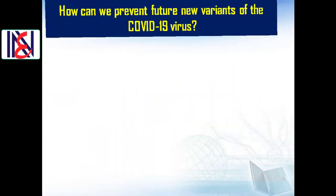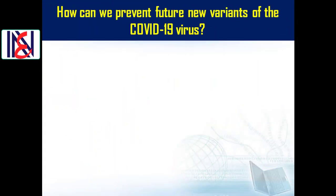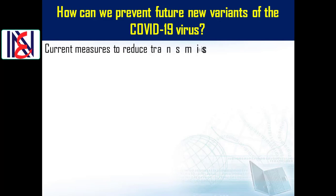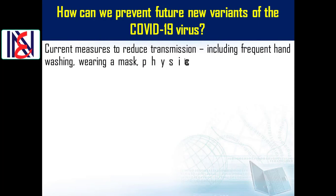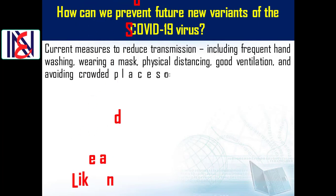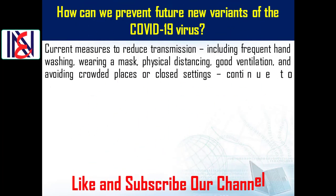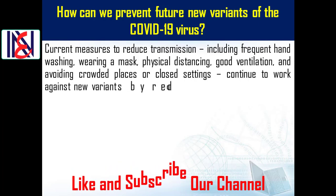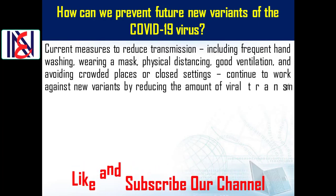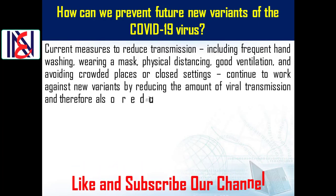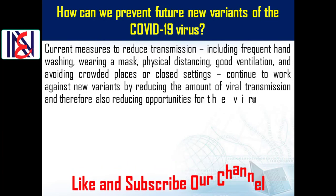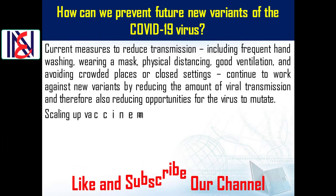How can we prevent future new variants of the COVID-19 virus? Current measures to reduce transmission — including frequent handwashing, wearing a mask, physical distancing, good ventilation, and avoiding crowded places or closed settings — continue to work against new variants by reducing the amount of viral transmission and therefore also reducing opportunities for the virus to mutate.